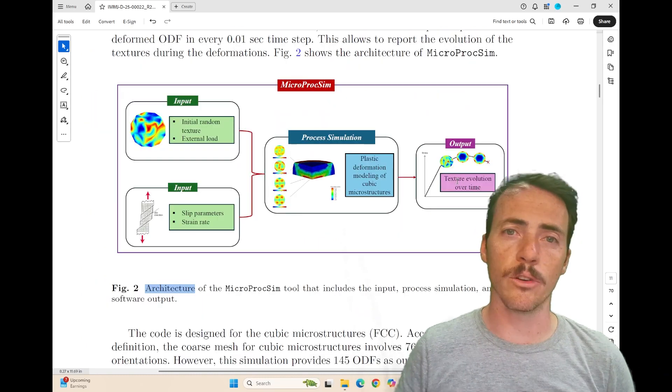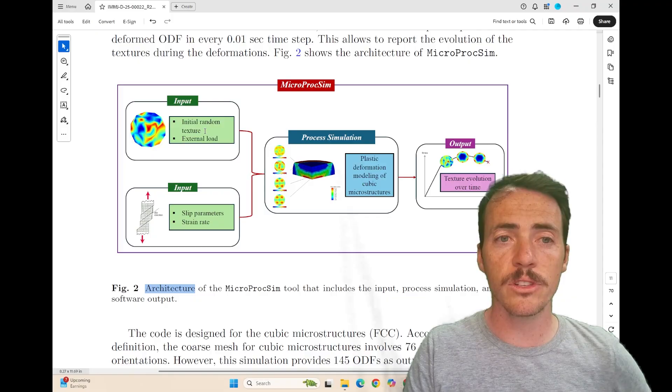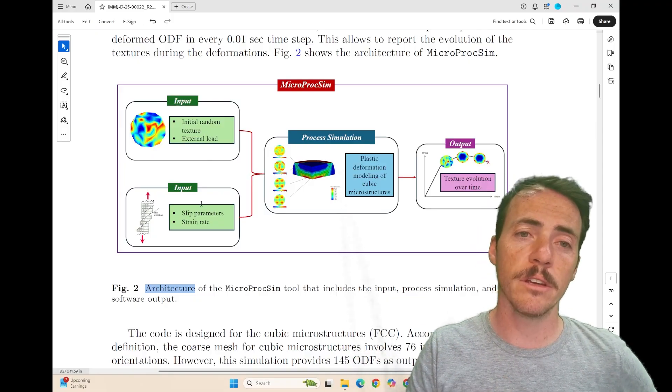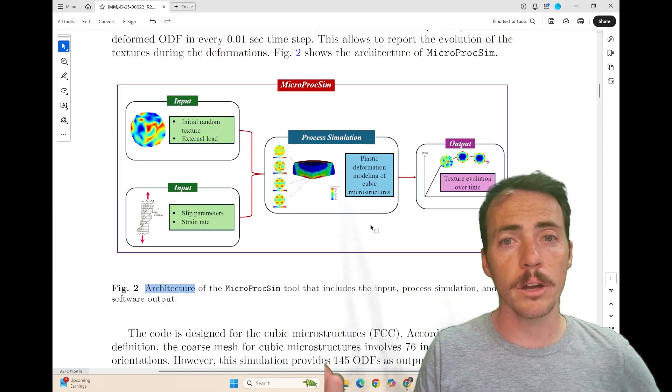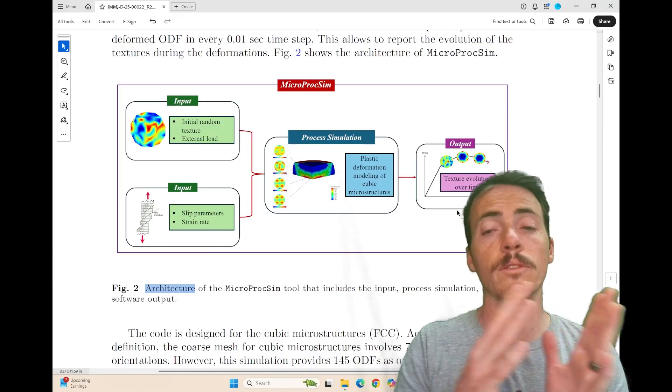Here's what the software architecture ultimately looks like. The inputs are going to be the initial random texture and the external load, along with the slip parameters and the strain rate. These are taken into the actual simulation, which does a plastic deformation modeling of these cubic microstructures. And the output is then the actual texture evolution over time.